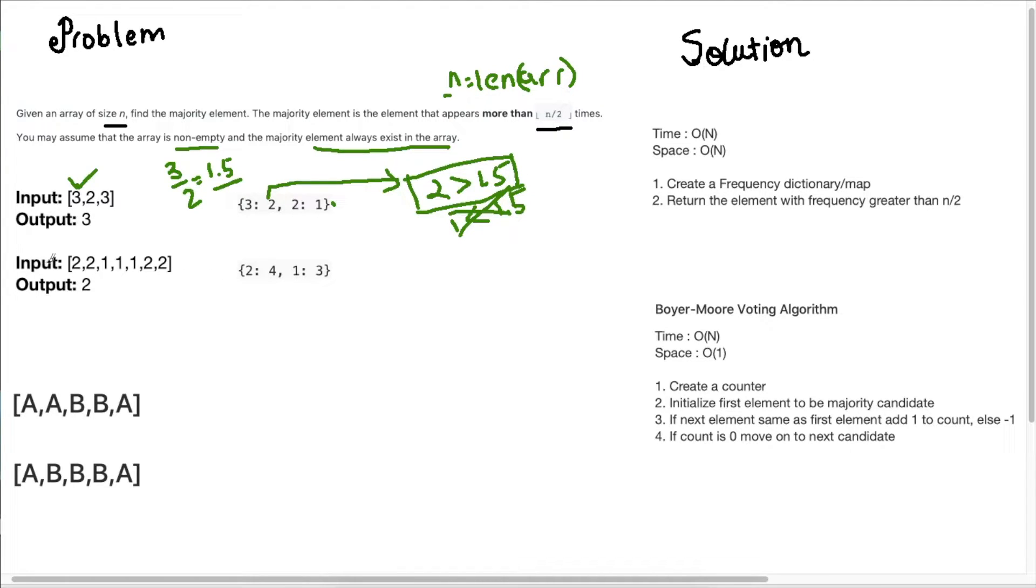So let's look at another example here. So we have an input array like this. So for this array, n is 7. And 7 over 2 is 3.5. So we're going to compare against 3.5. And we can see that the occurrence of 2 is 4. So 4 is greater than 3.5. And this is how we'll get our answer.